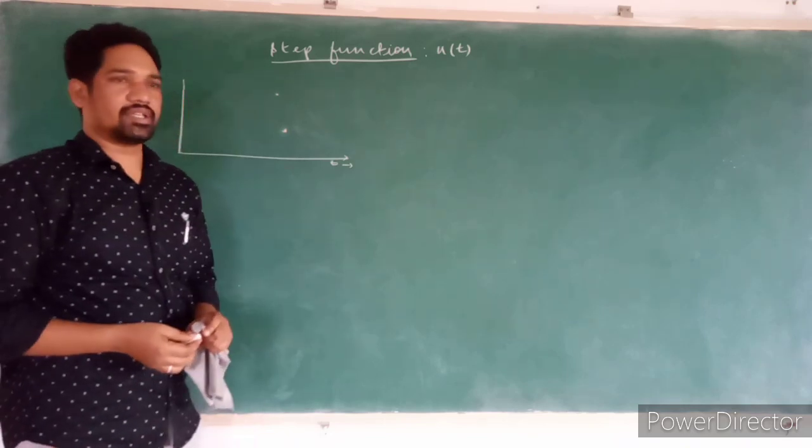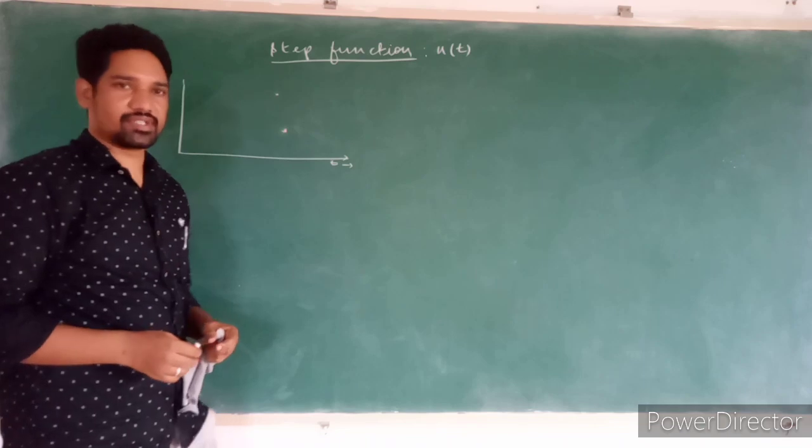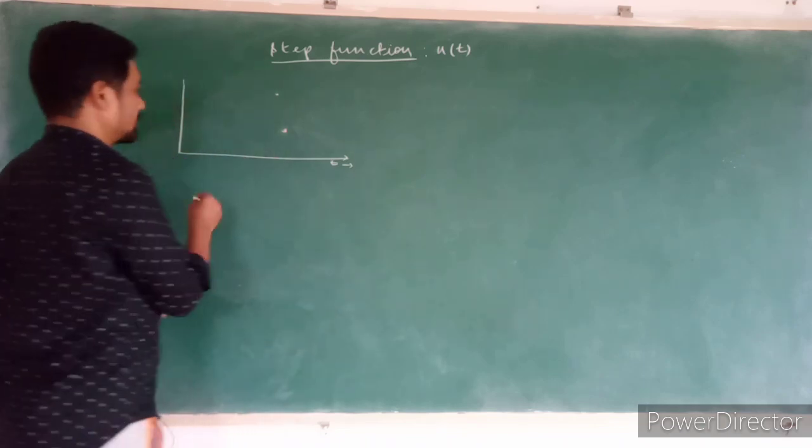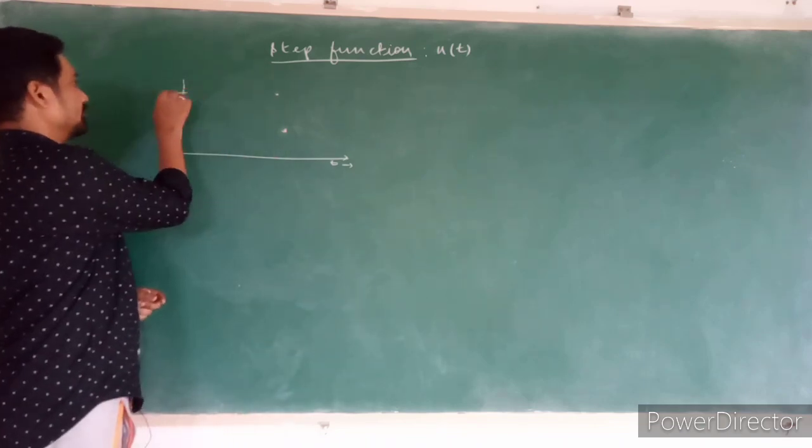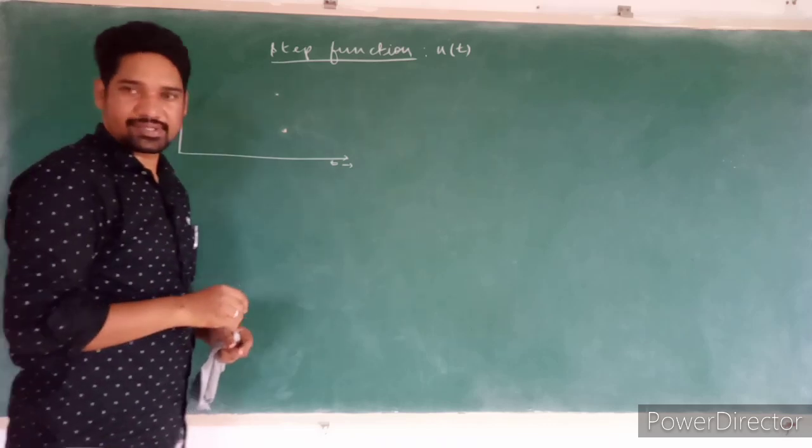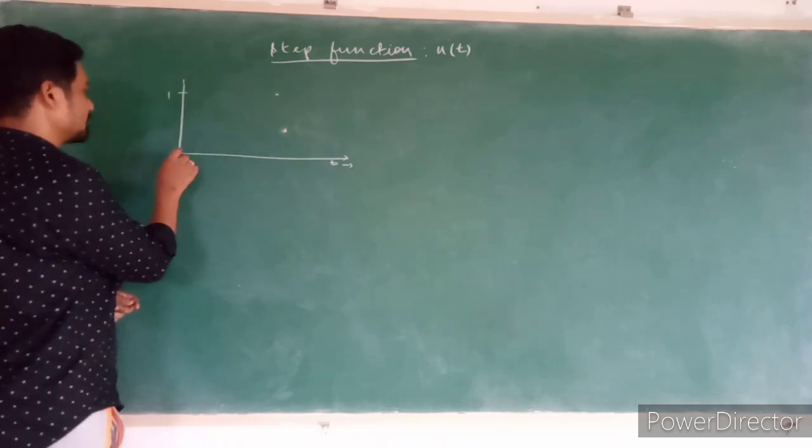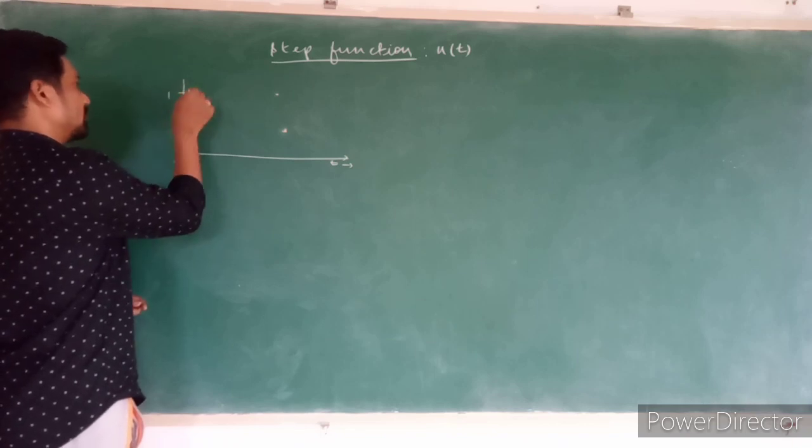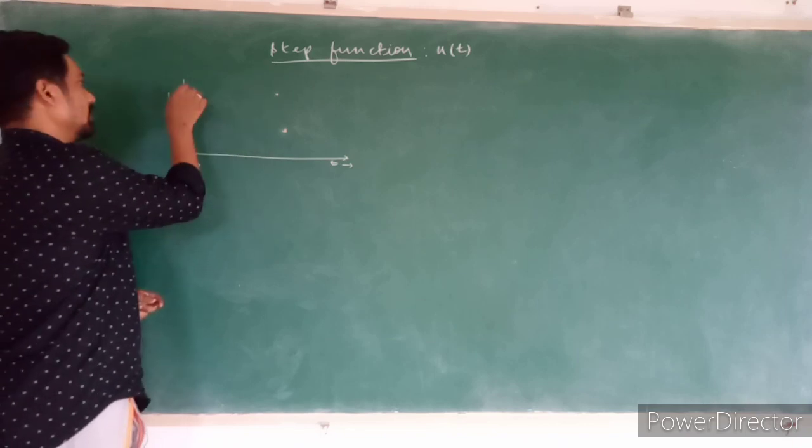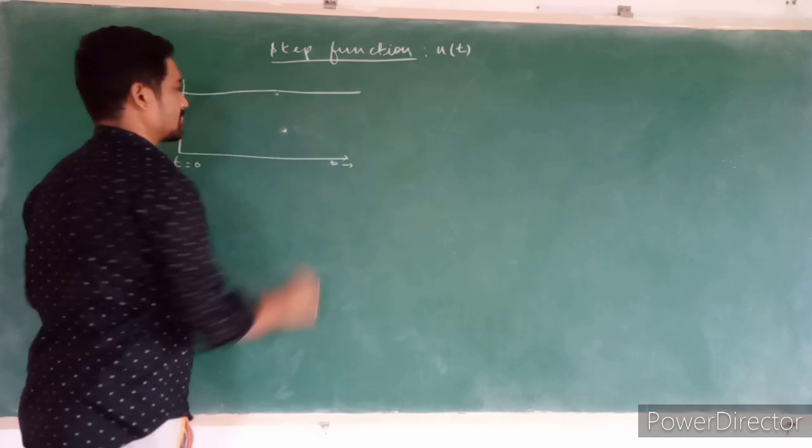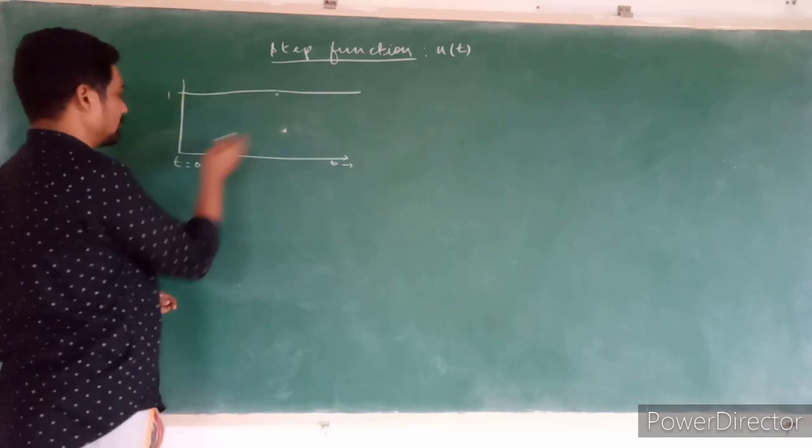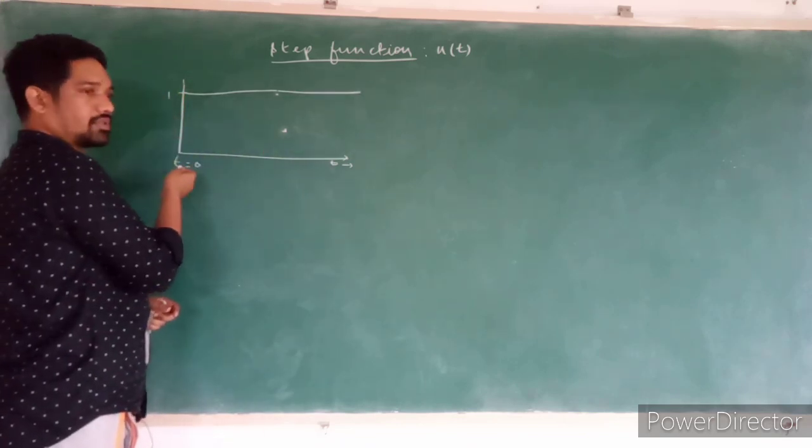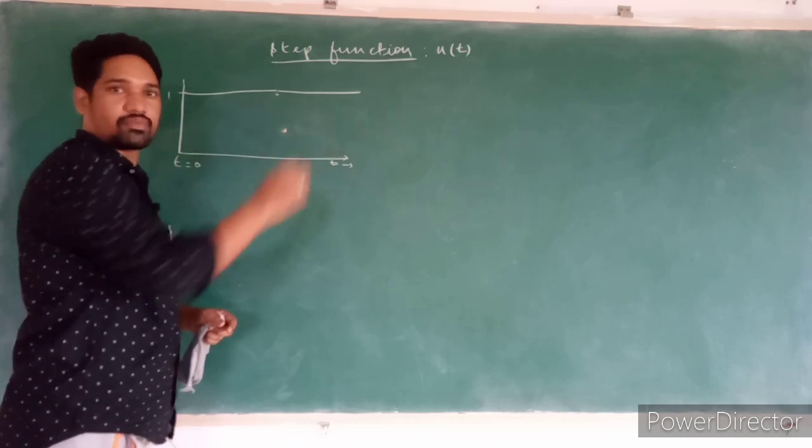Generally, in majority of applications, unit step function is considered, and for a unit step function, the amplitude is 1. And the signal starts commencing from t equal to 0, and with amplitude 1, it continues up to infinity. It is 1 all over, as soon as t equal to 0 it starts commencing and extends up to infinity.